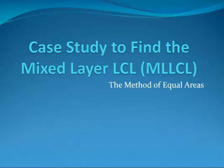To find the mixed layer LCL, we use the method of equal areas to first determine the layer mean mixing ratio and potential temperature in the lowest 100 millibars. Doing that requires some visual estimations to select the correct mixing ratio and potential temperature lines.